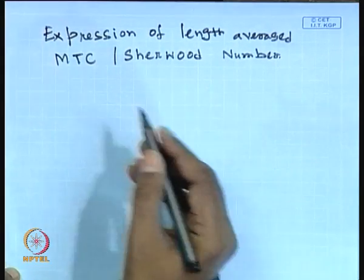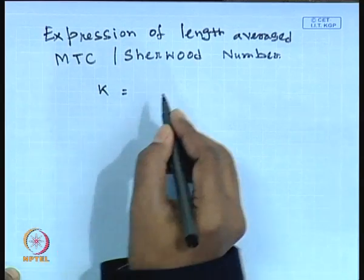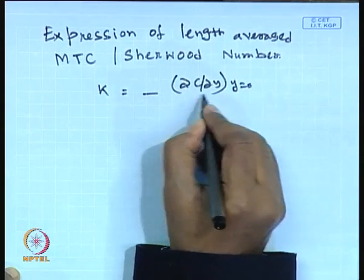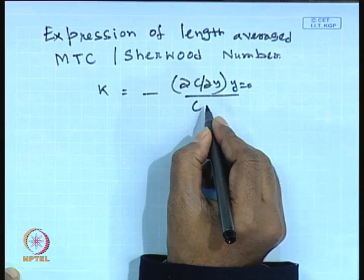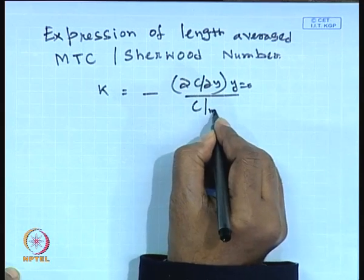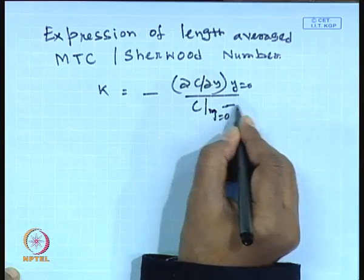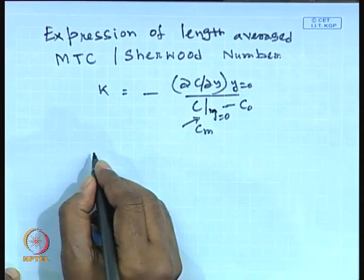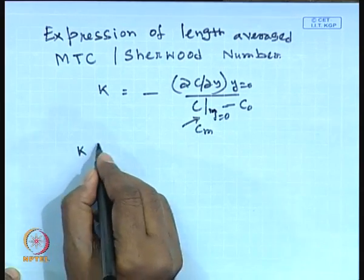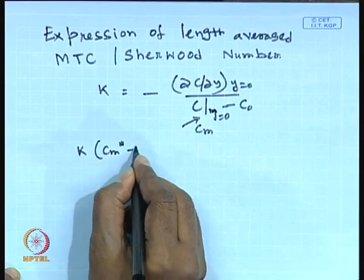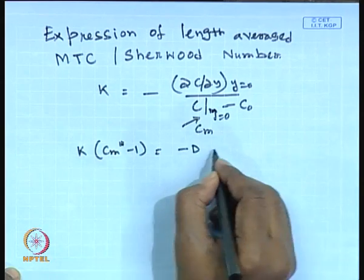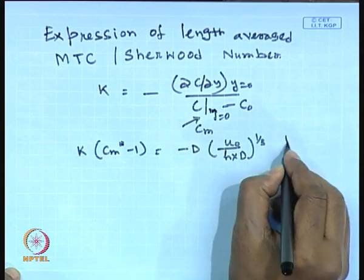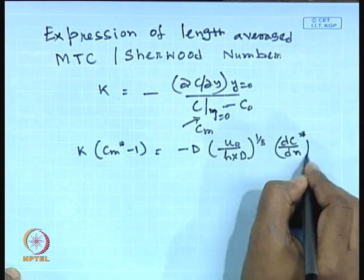First, we wrote down the definition of mass transfer coefficient: it will be minus del-c del-y evaluated at y equal to 0, divided by c at y equal to 0 — that is the membrane surface concentration c_m — minus c at the bulk. Therefore, you can write k times (c_m* minus 1) equals minus D times (u₀/h x)^(1/3) times dc*/dη at η equal to 0.